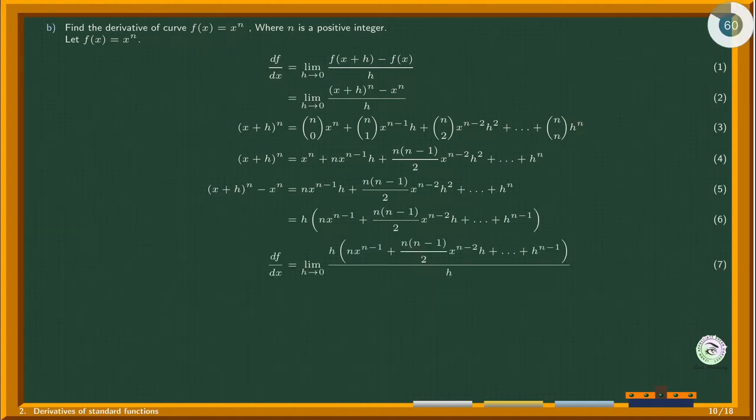Plugging the expression from equation 6 for (x+h)^n into equation 2 to get equation 7. Cancelling out h gives equation 8.